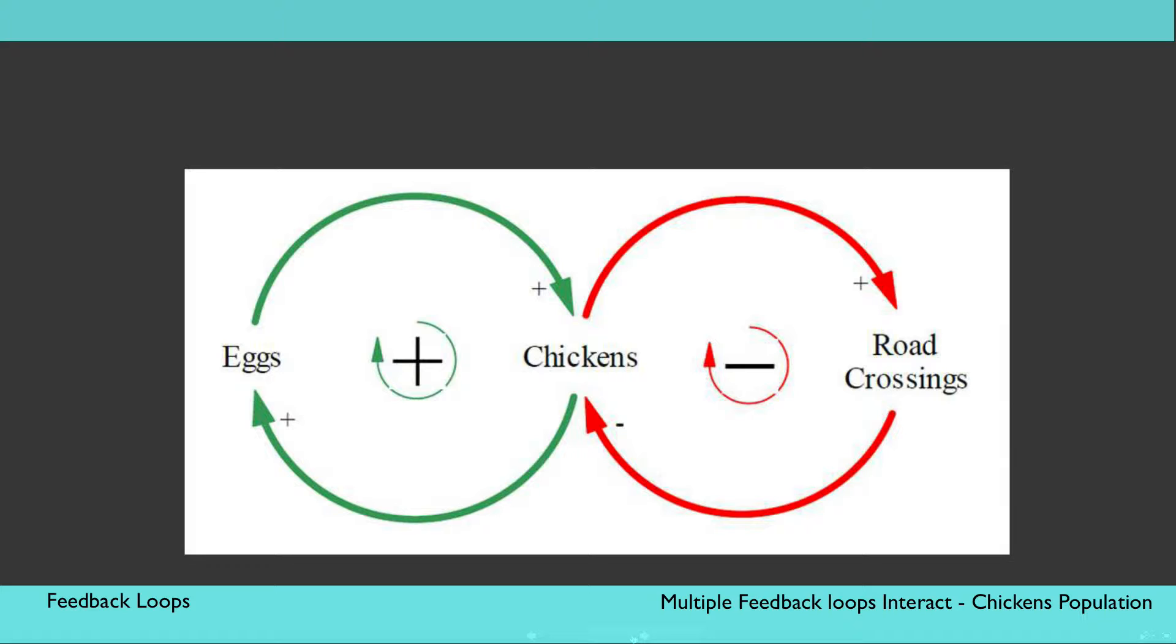First on the left side is a positive feedback loop linking the number of chickens with the number of eggs. The dynamic here is that as more chickens lay more eggs, more eggs hatch, which means that there will be more chickens that will lay even more eggs, increasing the chicken population.